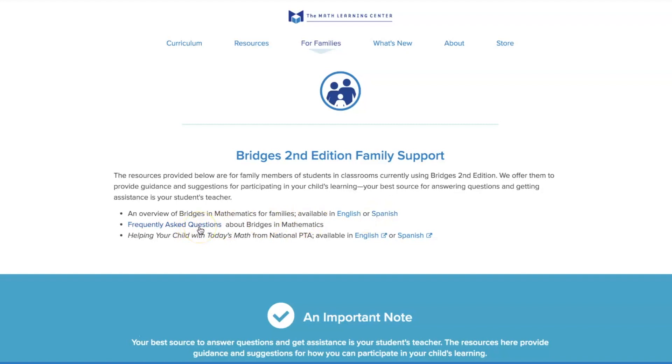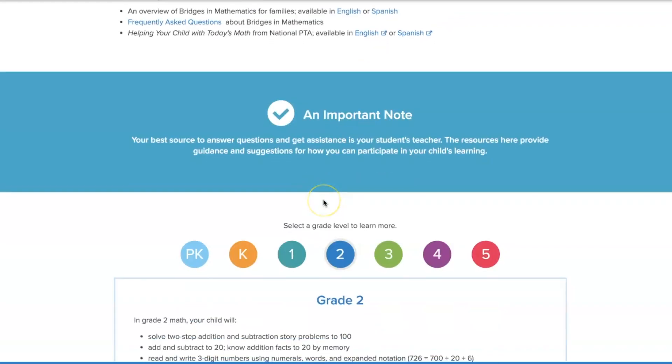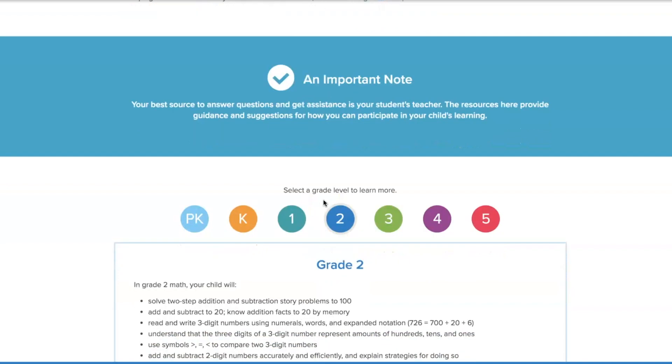We will focus this screencast on the grade level specific unit resources, which you will find by scrolling down and clicking on the grade level you would like to access. For example, if you would like to know more about the math your child will be learning in Kindergarten, click on the K button.